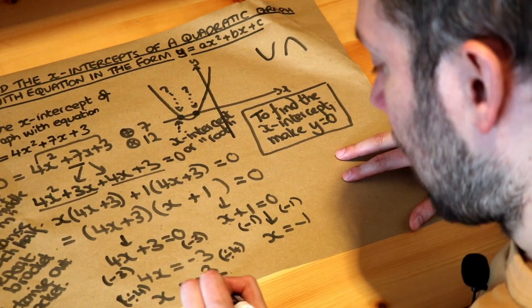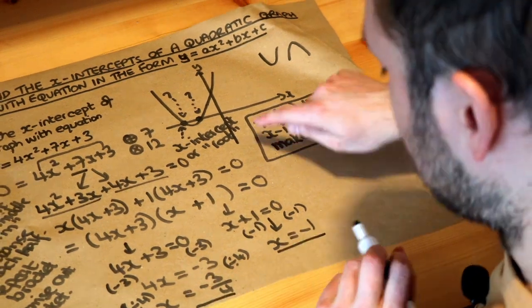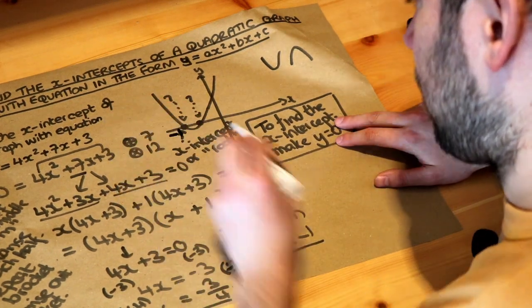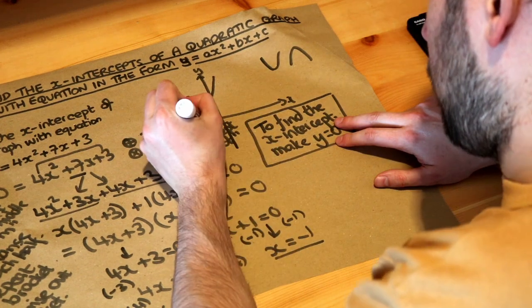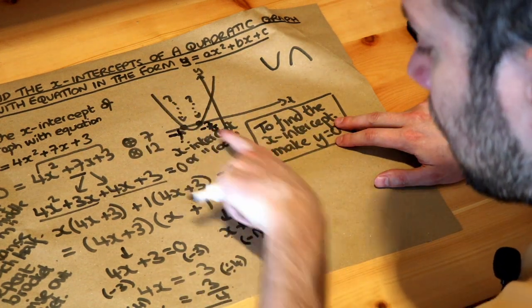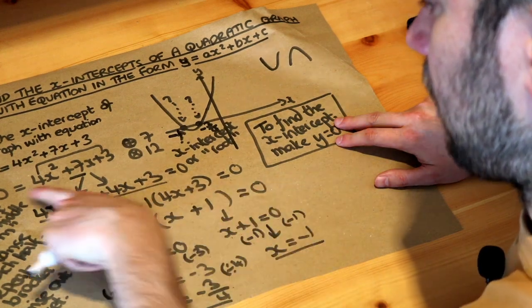So we've got the two x-intercepts, and if we just put that on this graph, well minus 1 is lower so that x-intercept there must be the minus 1, and this other one must be the minus 3 quarters. And there we go, we found the x-intercepts. These are the values of x which make the y value zero.